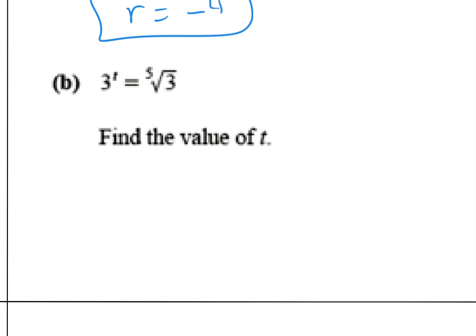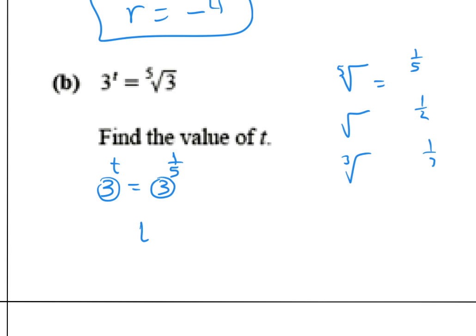Problem 10: solve 3^t = the square root of the fifth root of 3. The fifth root means power 1/5, and the square root means power 1/2. So 3^t = 3^(1/5). Since base equals base, power equals power, so t = 1/5.